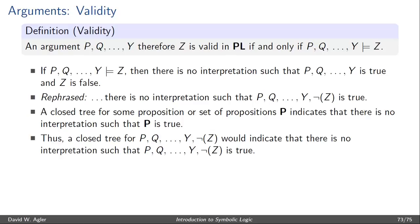then a closed tree for P, Q, Y, not Z would indicate that there's no interpretation that would make P, Q, Y, and not Z true.